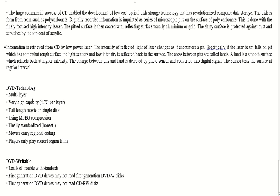A full-length movie can be stored on a single DVD disc using MPEG compression. DVDs carry regional coding so that players only play correct-region films. Writable DVDs faced compatibility issues — first-generation DVD drives may not read first-generation DVD writable disks, and first-generation DVD drives may not read CD read-write disks.